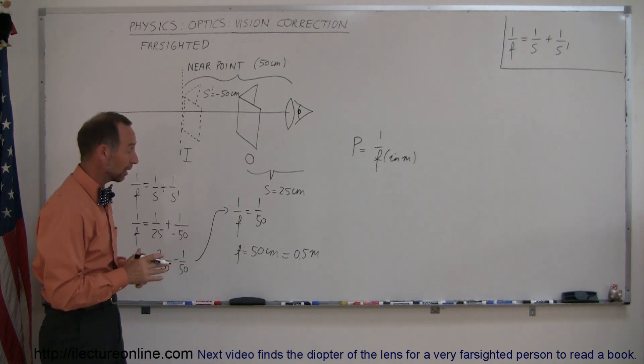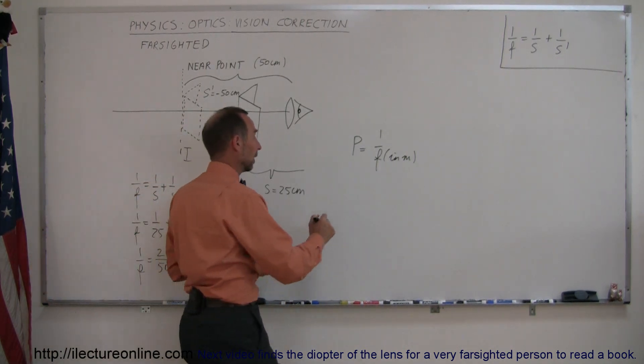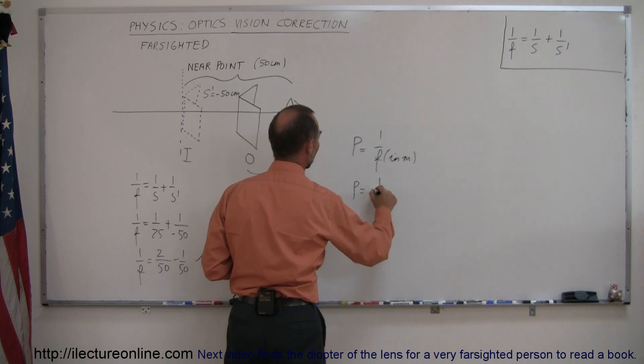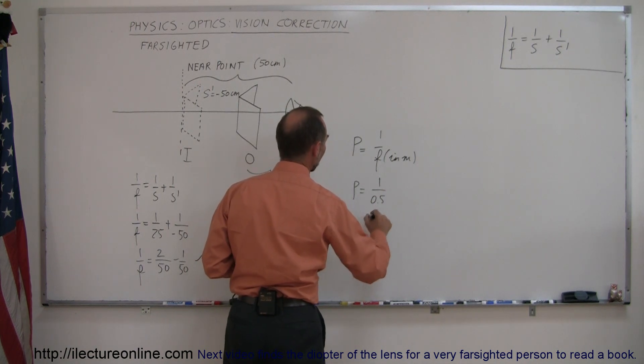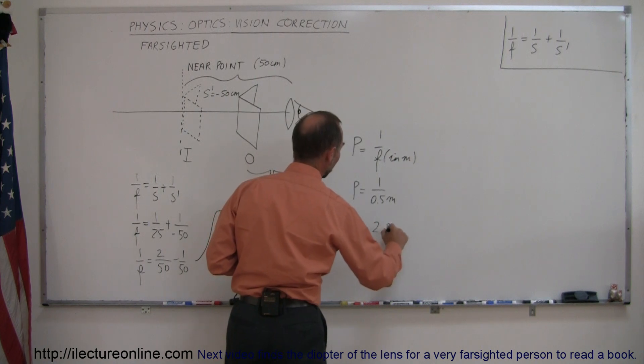Of course, remember that a positive focal length means it's a converging lens. So the power is equal to 1 over 0.5 meters, which means that the power is equal to 2 diopters.